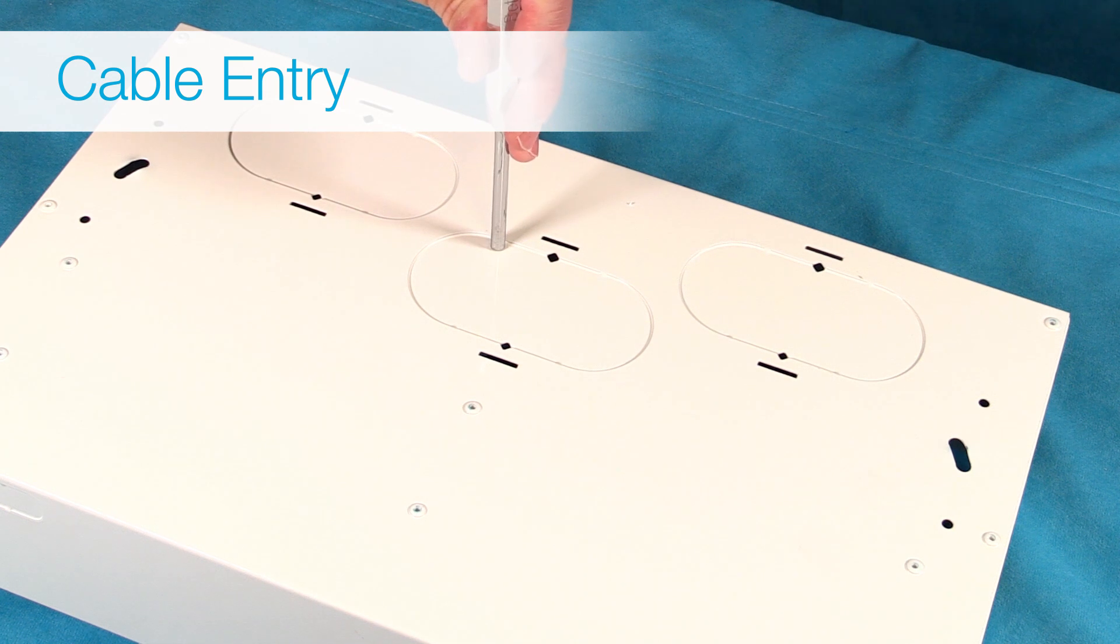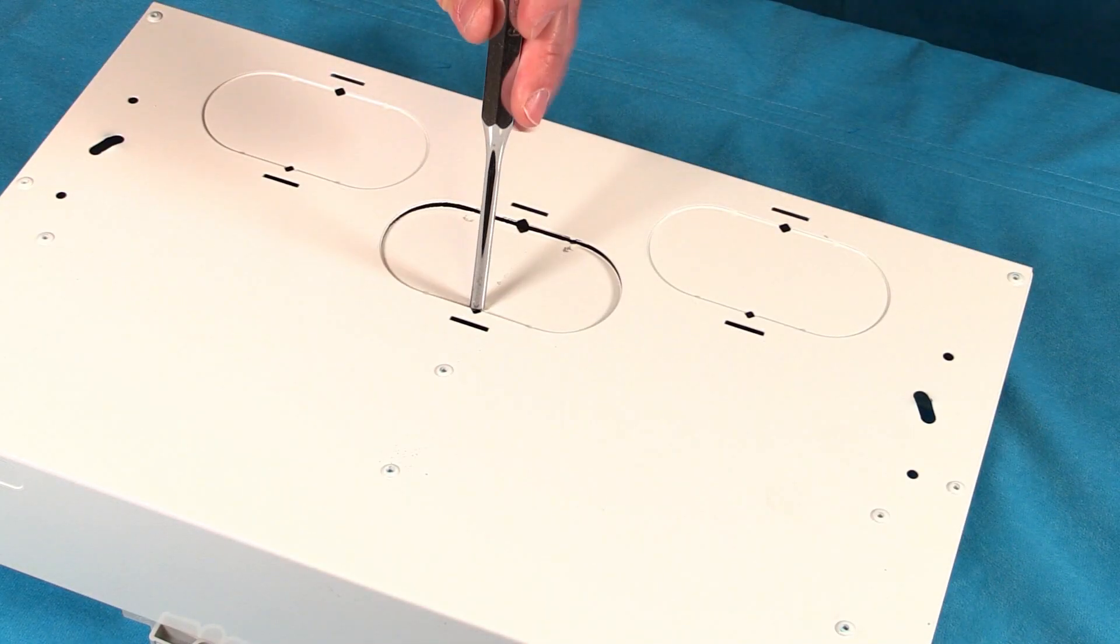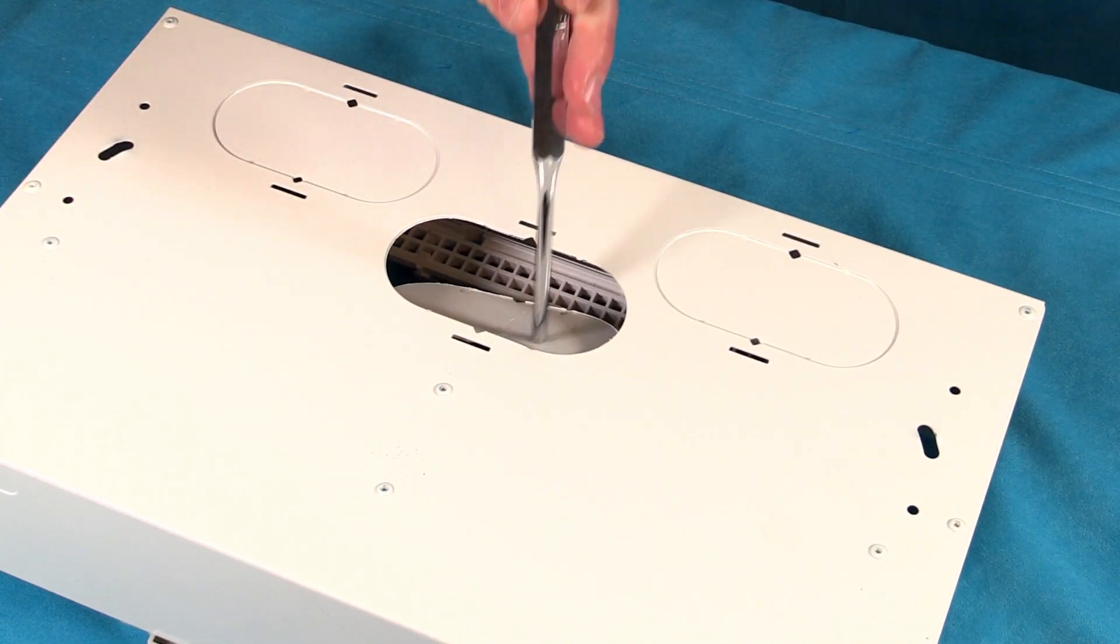We offer two cable entry methods. The first is via the rear knockouts. Knockouts are removed by breaking the four tabs as shown to remove the round plate.